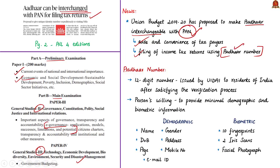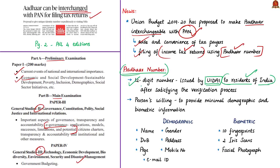Aadhaar number can be used wherever people are required to quote PAN. The Aadhaar number is a 12-digit random number issued by the Unique Identification Authority of India (UIDAI). This number is issued to the residents of India, so only residents of India can get an Aadhaar number. Any individual who is a resident of India, irrespective of age and gender, may voluntarily enroll to obtain the Aadhaar number. This number is issued after citizens satisfy the verification process laid down by UIDAI.